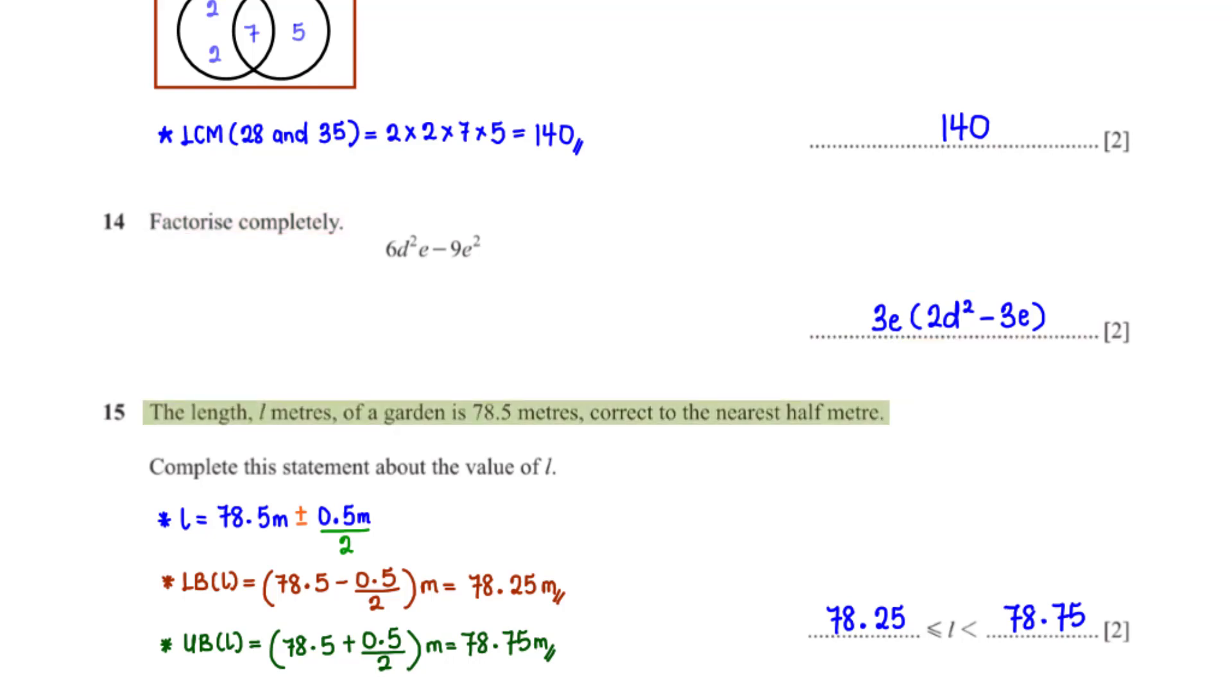The length L meters of a garden is 78.5 meters, correct to the nearest half meter. Complete the statement about the value of L. To correct the length L to the nearest half meter, we have 78.5 meters. Then we bring in plus and minus 0.5 meters. Then we divide 0.5 meters by 2. The lower bound of L is 78.5 minus 0.5 over 2 meters, which is equal to 78.25 meters. The upper bound of L is 78.5 plus 0.5 over 2 meters, which is equal to 78.75 meters. So we have L is greater than and equal to 78.25 and less than 78.75.